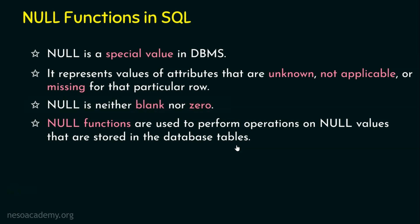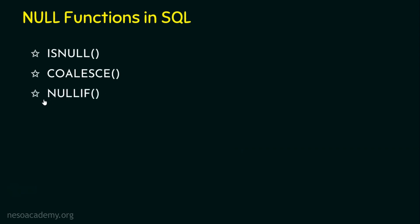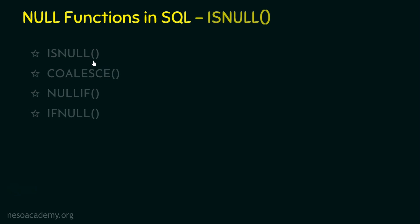We are done with the basics of null functions. Let's now see what the various null functions in SQL are. In this presentation I am going to explain four null functions: the first is ISNULL, the second is COALESCE, the third is NULLIF, and the last is IFNULL. Let's start with the ISNULL null function.